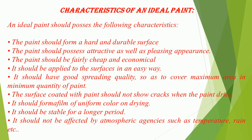Characteristics of an ideal paint: An ideal paint should possess the following characteristics. The paint should form a hard and durable surface. It should possess attractive as well as pleasing appearance. It should be fairly cheap and economical. It should be applied to surfaces in an easy way. It should have good spreading quality so as to cover maximum area with minimum quantity of paint. The surface coated with paint should not show cracks when the paint dries. It should form a film of uniform color on drying, be stable for a longer period, and not be affected by atmospheric agencies such as temperature, rain, etc.